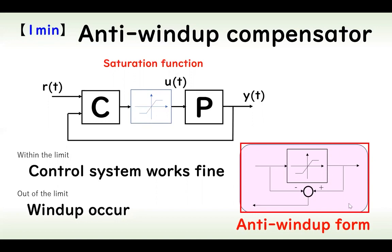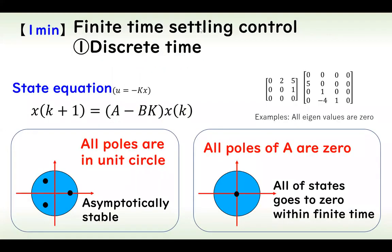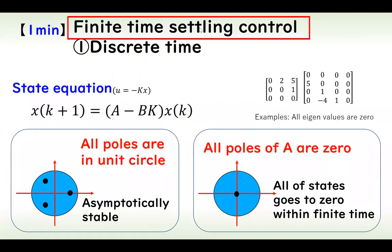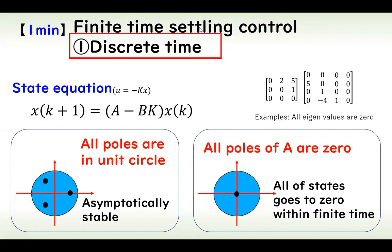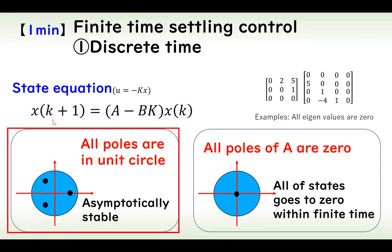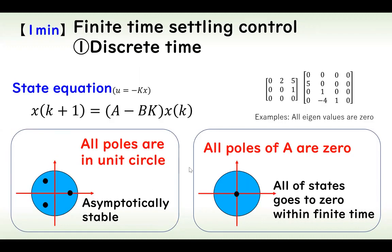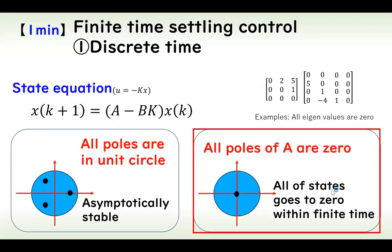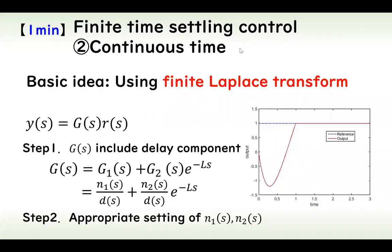There are three types of finite time settling control. For a discrete time system, asymptotic stability requires all poles inside the unit circle. On the other hand, when all poles of A are zero, all states go to zero within a finite time.